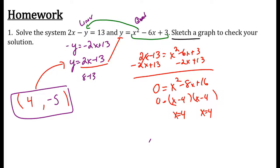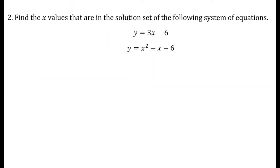So the solution to the system is the point 4, negative 5. And if you were to sketch a graph, that would be the intersection point. The intersection point would be at 4, negative 5.